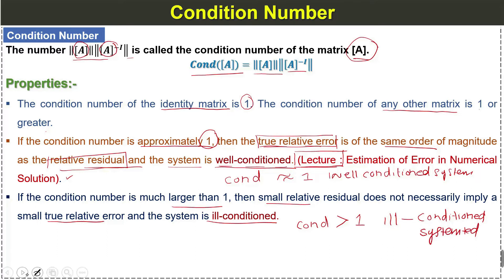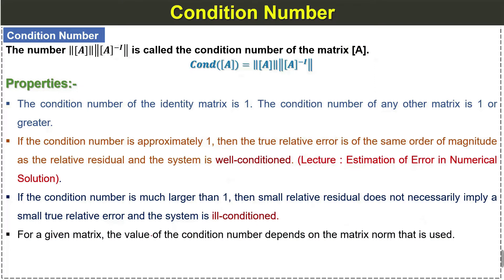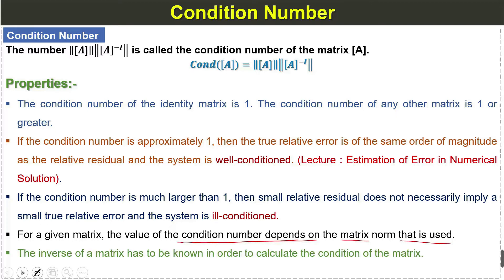For a given matrix, the value of the condition number depends on the matrix norm that is used — it depends on which norm we are using to find the condition number. Also, the inverse of the matrix must be known in order to calculate the condition number, because we need to calculate the norm of the inverse of the matrix. The condition number is the product of the norm of the matrix and the norm of its inverse.